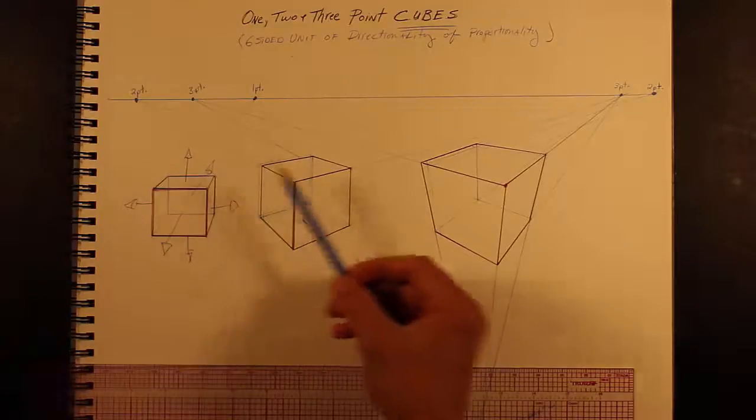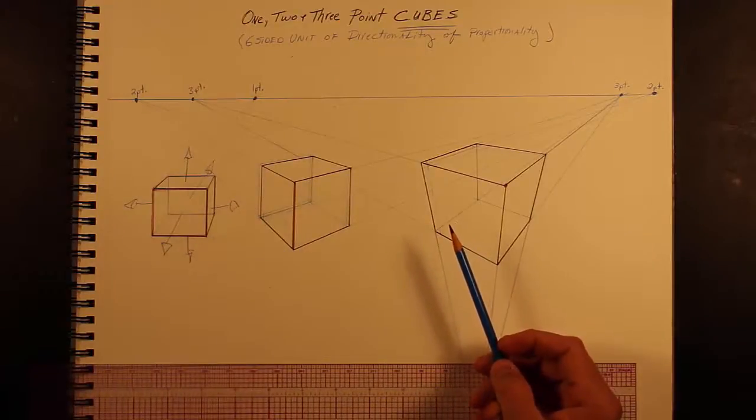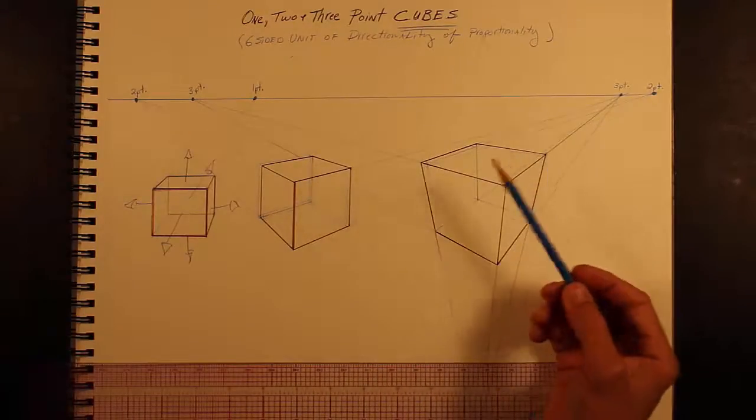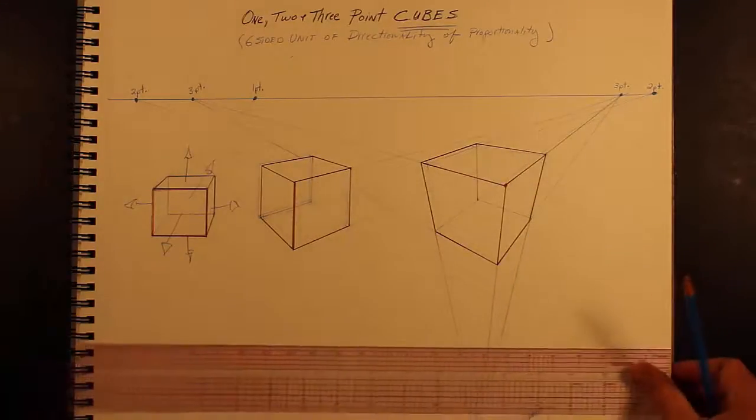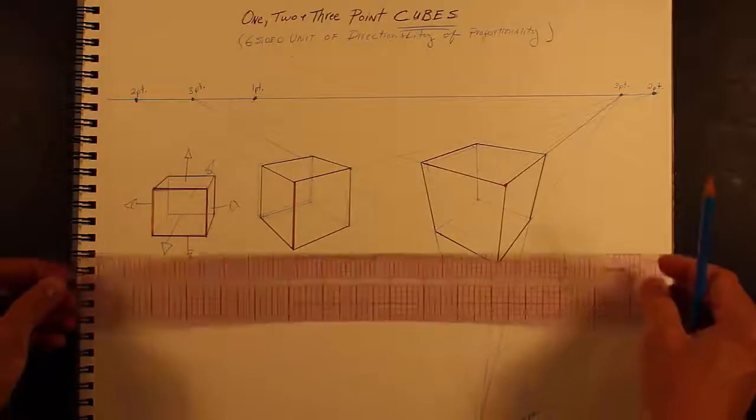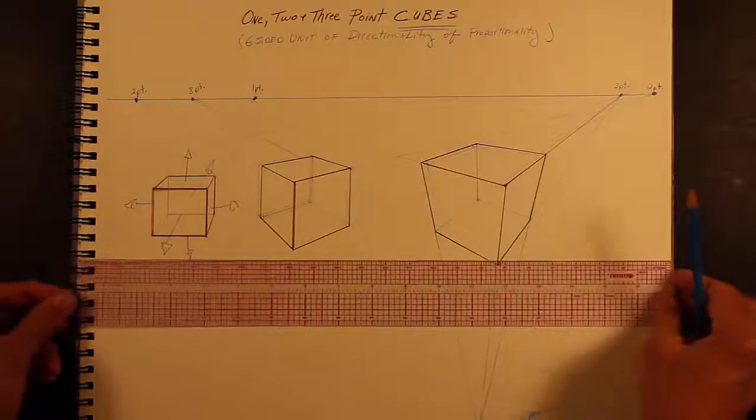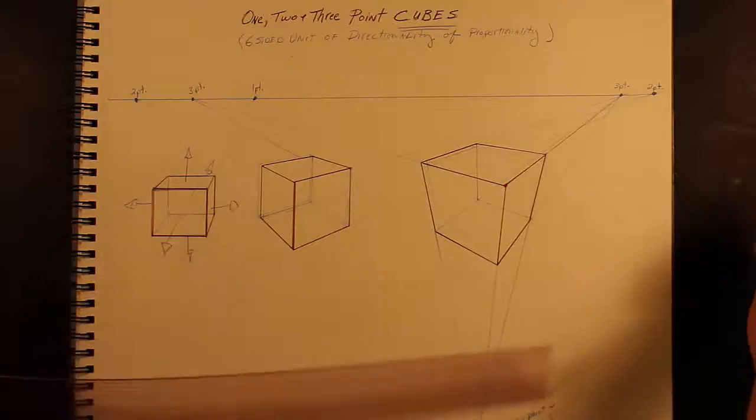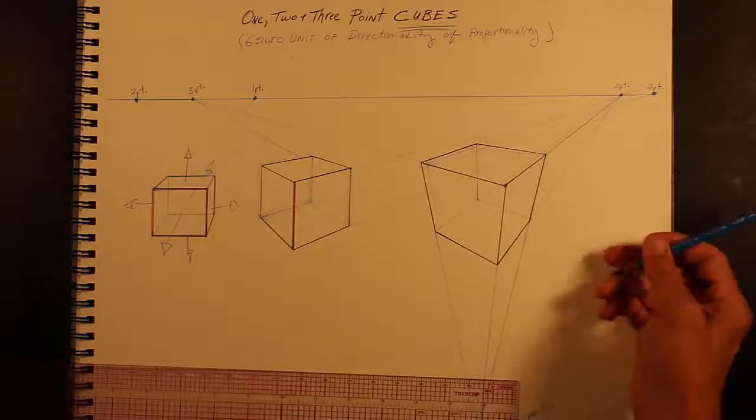So when we master that, we basically are mastering directionality and proportionality in space, and there's a lot of things in the world that are based on the rectangular prism, and that's what the cube is, a specialized rectangular prism.